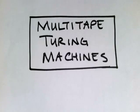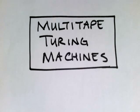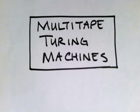In this video I'm going to talk about multi-tape Turing machines. I'm going to show how a Turing machine with multiple tapes is no more powerful than a Turing machine with a single tape. This is particularly useful because multi-tape Turing machines are a bit easier to program and more useful for some tasks.